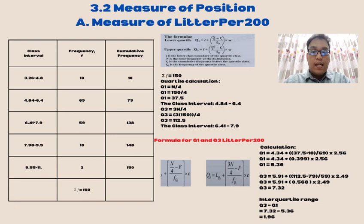For the interquartile range, the formula is quartile 3 minus quartile 1. We get the answer 1.96.